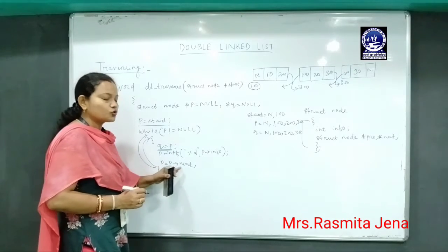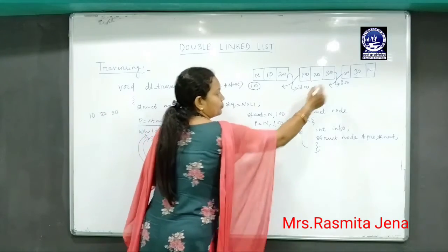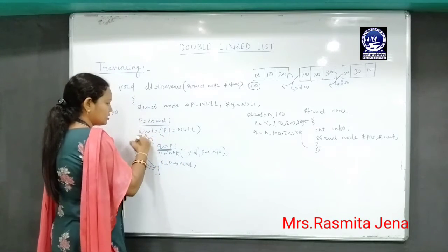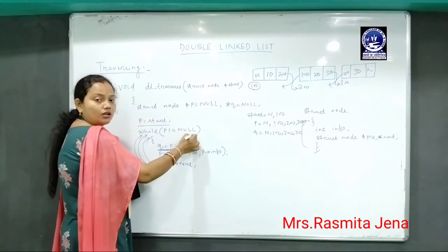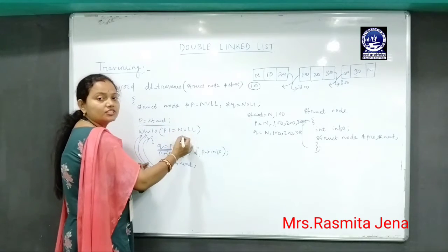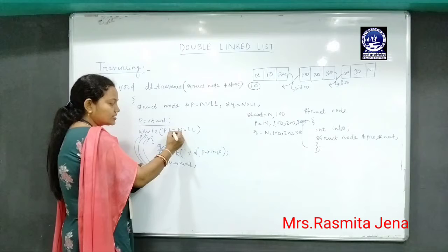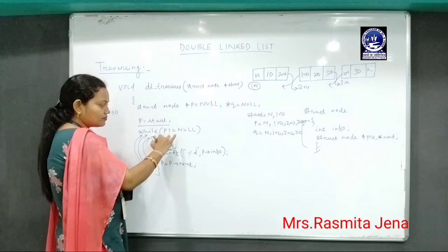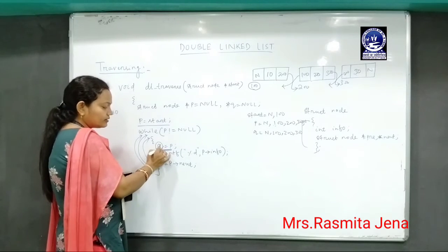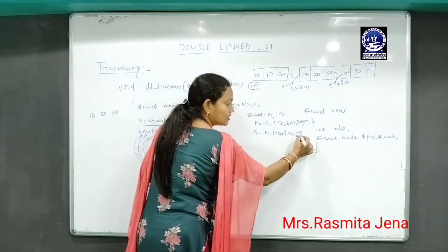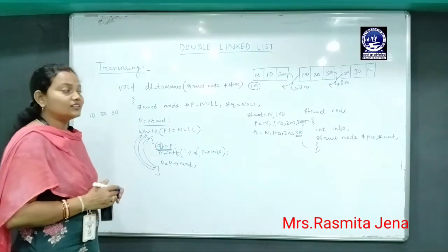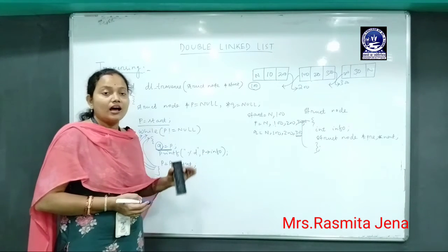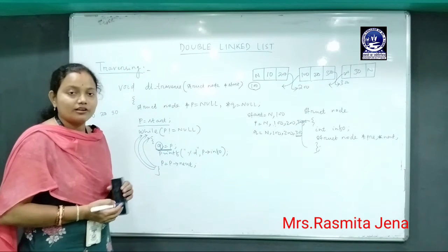Then p equals p->next, so p becomes null. Again checking the condition: null not equal to null — the condition is false, so I exit from the while loop. Whenever I exit from the loop, q contains the last node address that was most recently visited, which is the last node of the double linked list. By using the q pointer, I can traverse the double linked list in the backward direction.